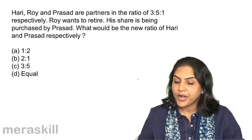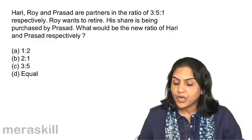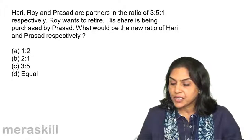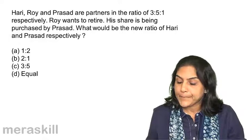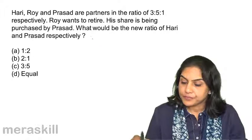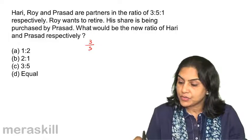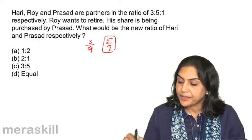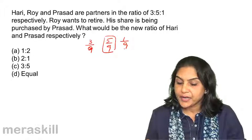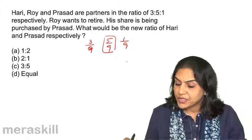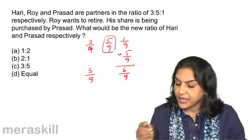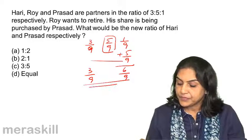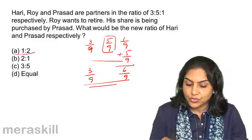Hari, Roy and Prasad are partners in the ratio 3:5:1. Roy wants to retire and his share is being purchased by Prasad. Prasad's share was 1/9; Roy's was 5/9. Prasad's new share becomes 1/9 plus 5/9 = 6/9. Hari's share remains 3/9. The new ratio of Hari and Prasad is 3:6, or 1:2. Correct answer is A.